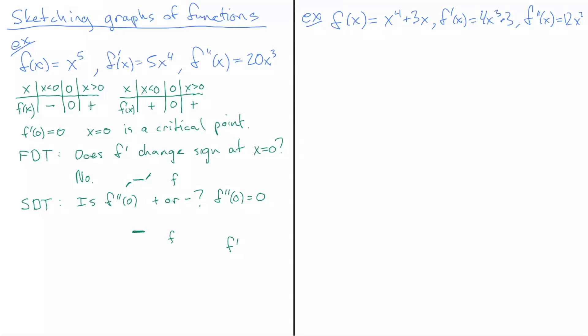If f'' is positive at a point, then f' is increasing. So if f'' is positive, the slope is increasing, meaning to get to a zero slope we would have come from a negative slope and then gone to a positive slope. We don't have that here.